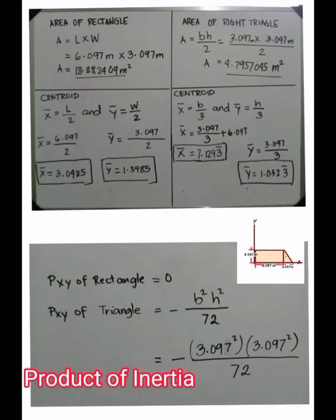The area of the rectangle is 18.8824 m² and the area of the right triangle is 4.7957 m². The centroid of the rectangle is x̄ = 3.0485 and ȳ = 1.5485. The centroid of the right triangle is x̄ = 7.1293 and ȳ = 1.0323. The product of inertia of the rectangle is understood to be zero.